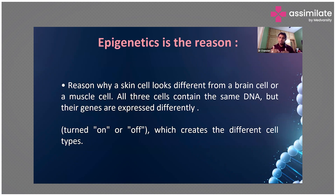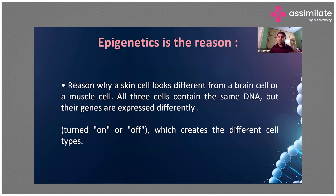Basically, cells originate from the same DNA, but skin cells are always skin cells and brain cells are always brain cells. There is differentiation and you have different cells in our body. How these different cells in our body originate from the same DNA — that is all because of this epigenetic reading.